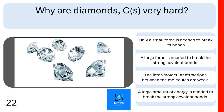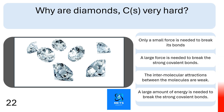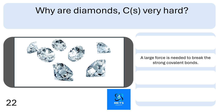Question twenty-two: why is diamond carbon solid very hard? Is it because only a small force is needed to break the bonds, a large force is needed to break the strong covalent bonds, the intermolecular attractions are very weak, or a large amount of energy is needed to break the strong covalent bonds? It is very hard because a large force is needed to break the strong covalent bonds.